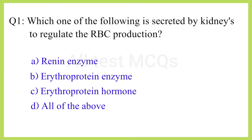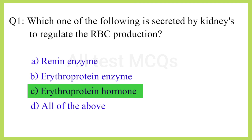Q1. Which one of the following is secreted by kidneys to regulate the RBC production? The correct answer is option C: Erythropoietin hormone.